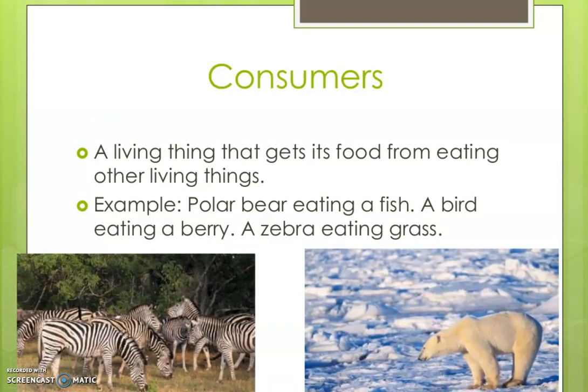Next, consumers. A consumer is a living thing that gets its food from eating other living things. For example, a polar bear eating a fish, a bird eating a dari, and a zebra eating grass.